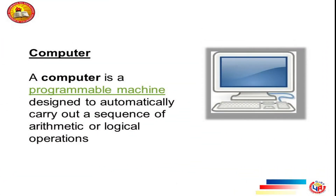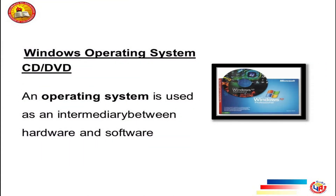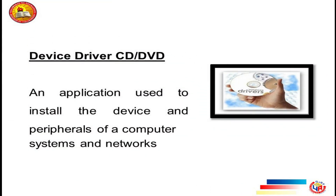Computer: A computer is a programmable machine designed to automatically carry out a sequence of arithmetic or logical operations. Windows Operating System CD/DVD: An operating system is used as an intermediary between hardware and software. Device Driver CD/DVD: An application used to install the devices and peripherals of computer systems and networks.